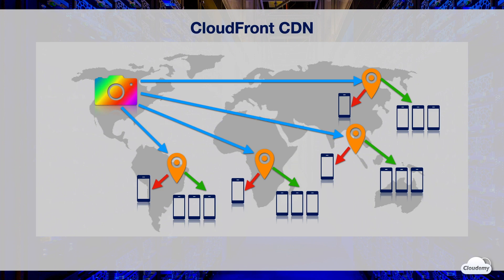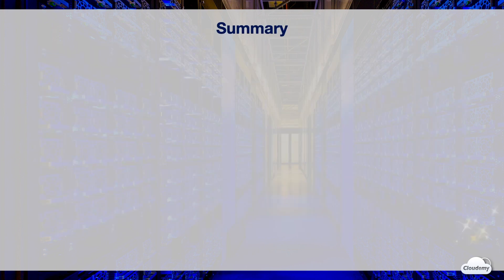Content will be delivered and cached in the edge locations, and from edge locations the content will be delivered to your end users. Without edge locations, these contents would always have to travel from the origin to end users. You don't need to pay for data transferred out of S3 into CloudFront — it's much cheaper to use CloudFront than sending data from S3 to your users directly.